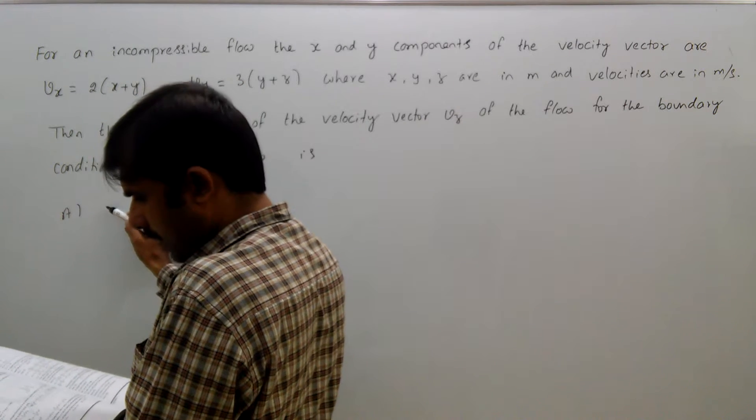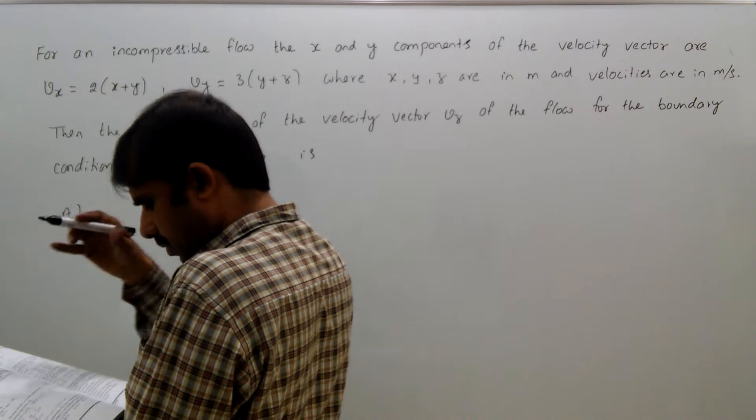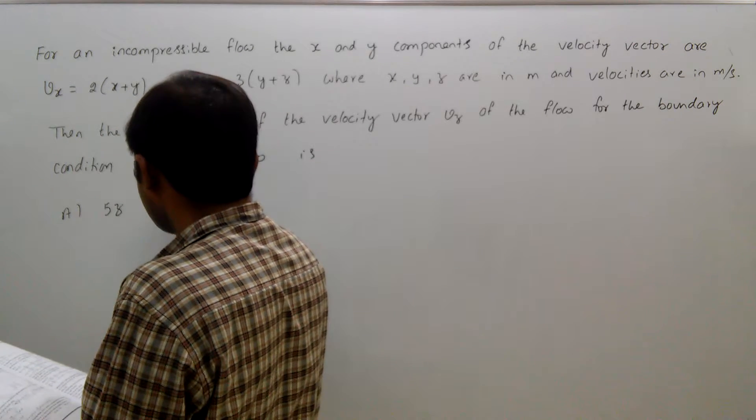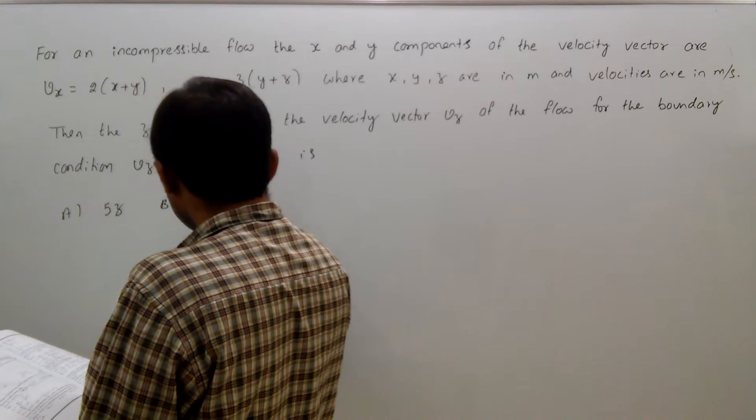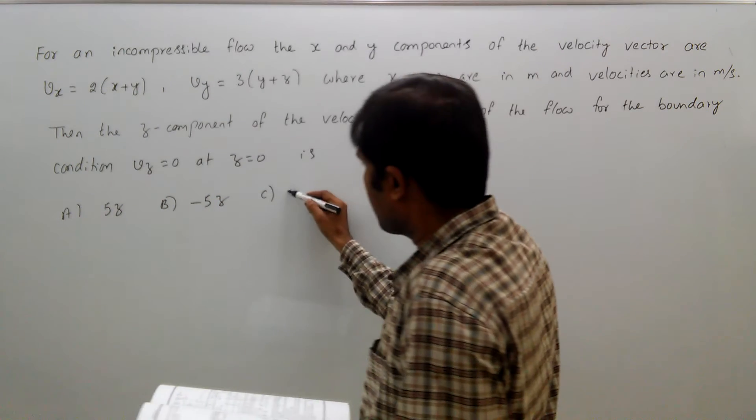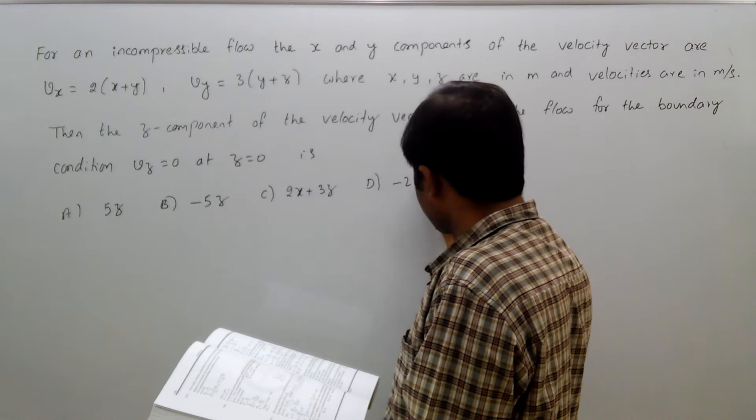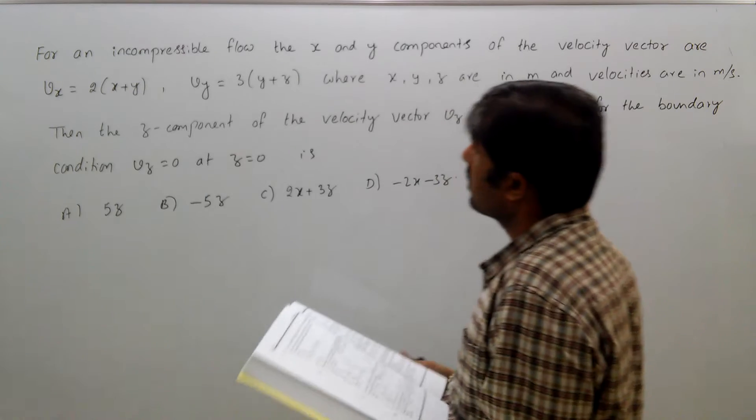Option a: 5z, option b: -5z, option c: 2x + 3z, option d: -2x - 3z.